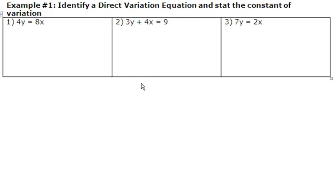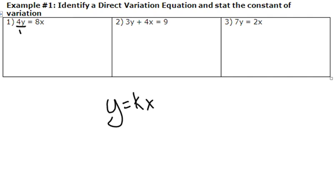Example number one asks you to identify a direct variation equation and state the constant of variation. If it's a direct variation equation, when I solve for y, it should look like y equals k times x. If I look at number one, I have 4y equals 8x. I'm going to solve for y. Since this is 4 times y, I would divide both sides by 4. The 4s cancel and I get y equals 2x. This is a direct variation equation because it's in the form y equals k times x. In this case, our k is 2.